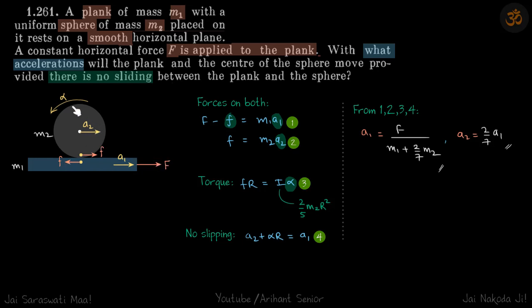Now let's find the values of alpha, a1, and a2. We should be able to find these. So let's write the forces on both the sphere and the plank. F minus f equals m₁a₁, and f is the only force on the sphere, so that is m₂a₂.